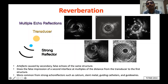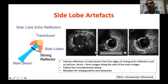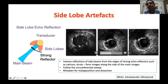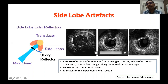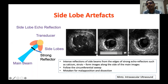Side lobe artifact: usually the main lobe contributes to image formation, but side lobes when they encounter strong reflecting surfaces like stent edges or calcium also contribute to the image. They follow the circumferential sweep, resulting in extension of stent struts or calcium. This produces a false appearance of stent malapposition and a false appearance of dissection closer to the catheter plaque. You should keep this side lobe artifact in mind to avoid misinterpreting it as malapposition or dissection.